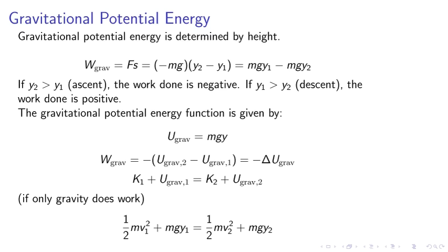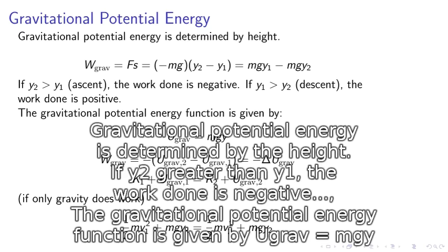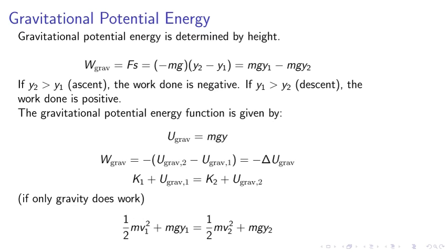Gravitational potential energy is determined by the height. If y2 is greater than y1, so we are ascending, the work done is negative. If y1 is greater than y2, the work done is positive. The gravitational potential energy function is given by U_grav equals mgy.